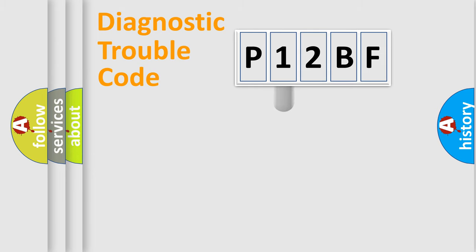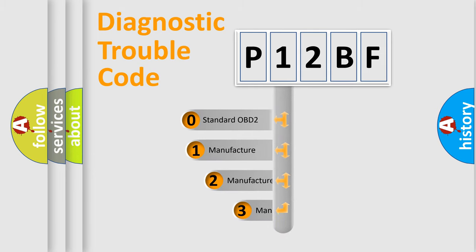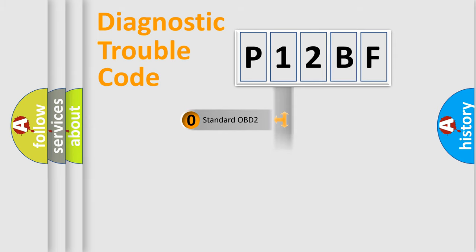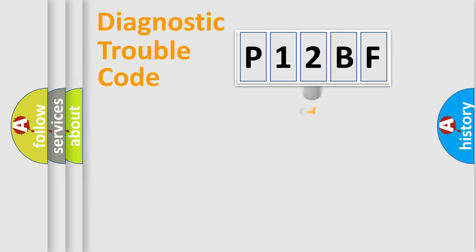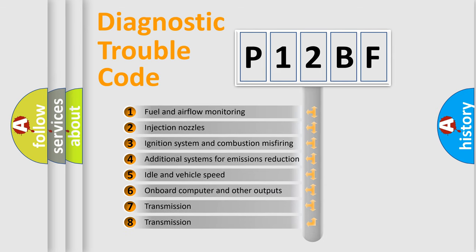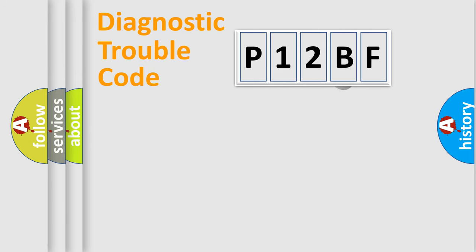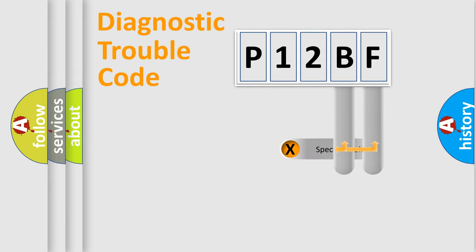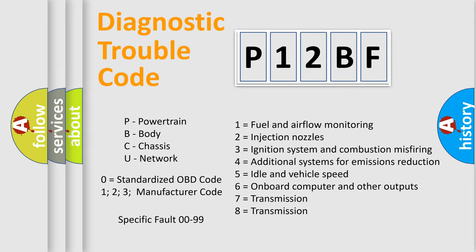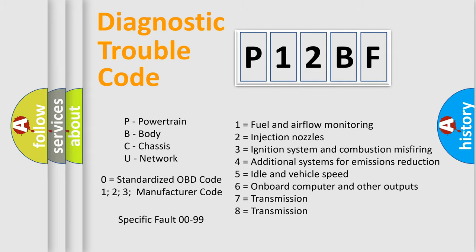This distribution is defined in the first character of the code. If the second character is expressed as zero, it is a standardized error. In the case of numbers 1, 2, or 3, it is a more specific car-manufacturer expression. The third character specifies a subset of errors. This distribution is valid only for the standardized DTC code. Only the last two characters define the specific fault of the group, and this division is valid only if the second character code is zero.